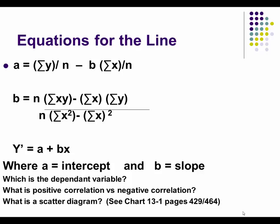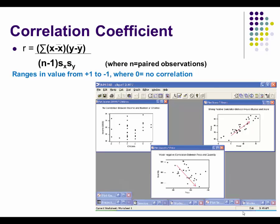Before calculating the regression formula, you could produce a scatter diagram. Here we have three scatter diagrams depicting x, y coordinates for three datasets. For each diagram, you could manually draw a line through the data points which minimizes the dispersion between each point and the line — that is, draw a line which best describes the relationship between x and y.